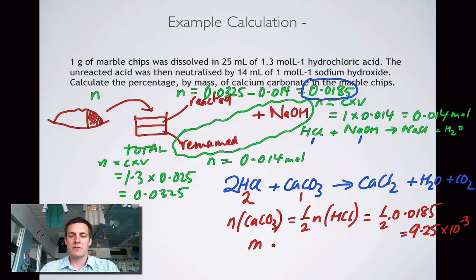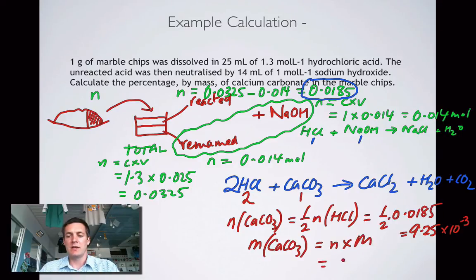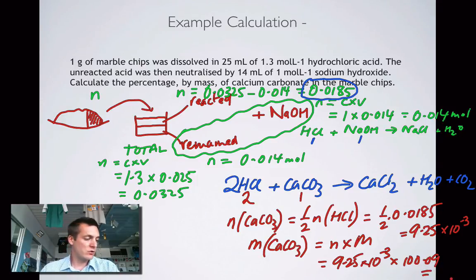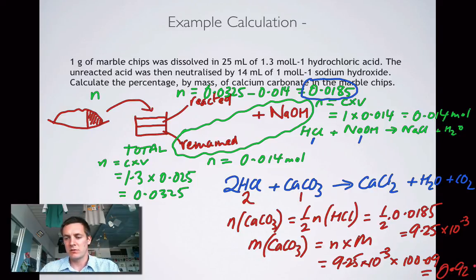What's the mass of calcium carbonate? Because remember, I'm trying to find a percentage by mass. So the mass of calcium carbonate, well, that's given by the number of moles times big M. And that is 9.25 times 10 to the minus 3 multiplied by 100.09. And that is equal to 0.926 grams. All right?